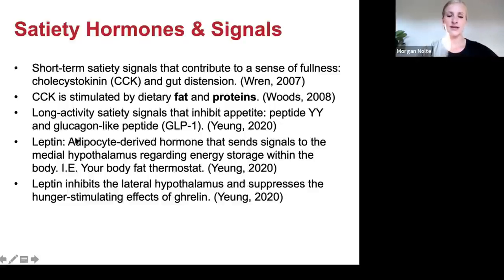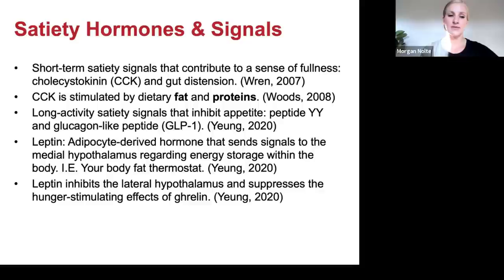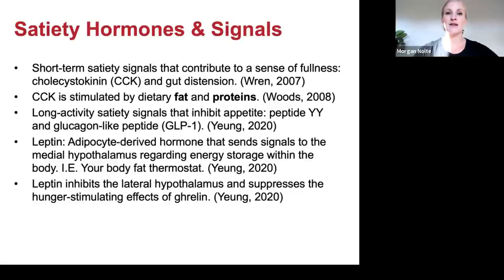Leptin is derived from fat cells — adipocytes — and sends signals to the medial hypothalamus regarding energy storage, i.e., how much body fat you have. That's why I call leptin your fat sensing hormone. Leptin inhibits the lateral hypothalamus and suppresses the hunger-stimulating effects of ghrelin. When you eat and gain body fat, leptin will inhibit the appetite-stimulating effects of ghrelin, signaling to your brain that you have enough fat and don't need to eat more. That's how your appetite is supposed to work.